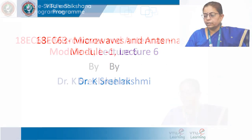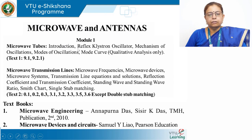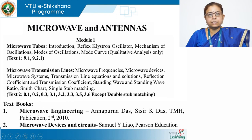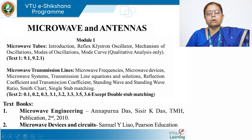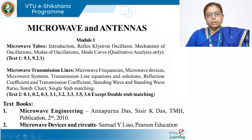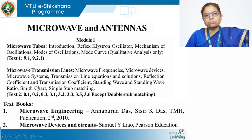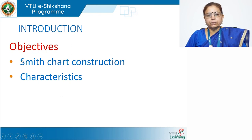In the previous lectures, we have seen the contents on microwave tubes and also on the reflex klystron oscillator, microwave frequencies in systems, transmission line equations and solutions, and some parameters of importance: reflection coefficient, transmission coefficient, and standing wave ratios. In today's lecture, let us discuss a graphical tool used for design and analysis of transmission lines, called the Smith chart. Let us look at its construction and characteristics.